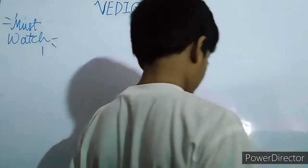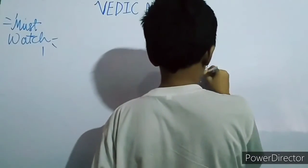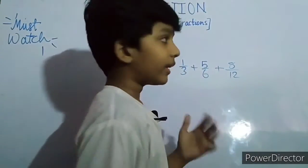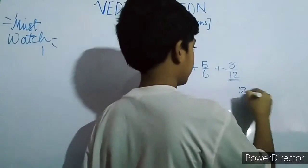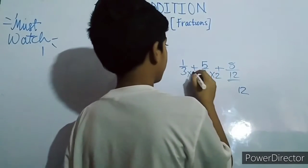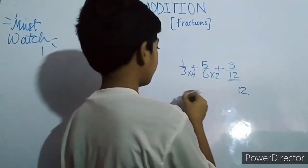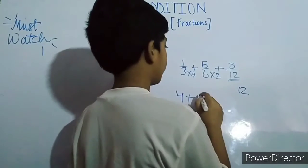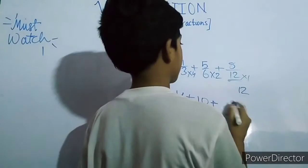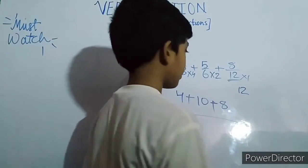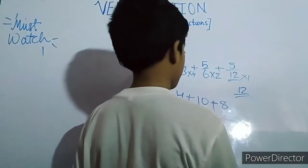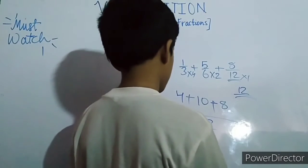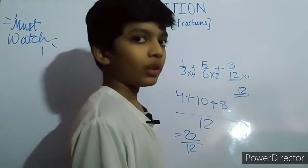Our next example is one by three plus five by six plus eight by twelve. Take a common multiple — you can take twelve: six into two is twelve and three into four is twelve. So twelve is the common multiple. One into four is four, five into two is ten, and eight into one is eight. For the denominator we have the common multiple twelve. Four plus ten is fourteen, fourteen plus eight is twenty two. So we get twenty two by twelve.